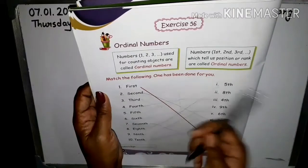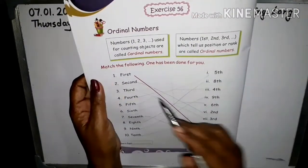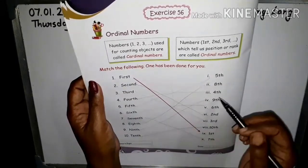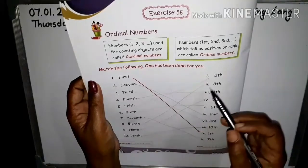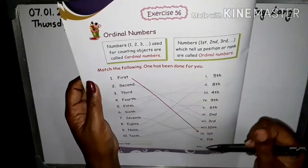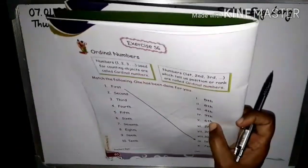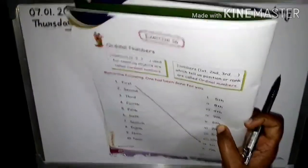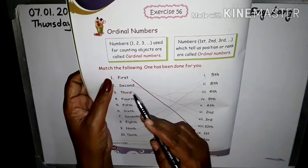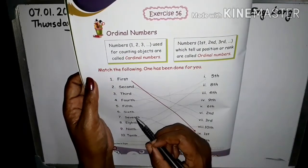First, second, third, fourth, fifth, sixth, seventh, eighth, ninth, tenth. Practice these ordinal numbers: first, second, third, fourth, fifth, sixth, seventh, eighth, ninth, tenth.